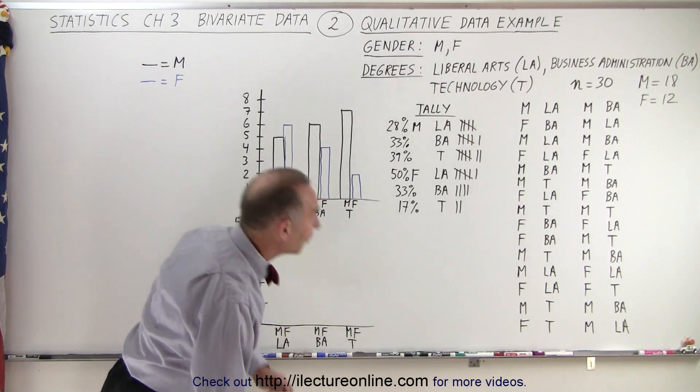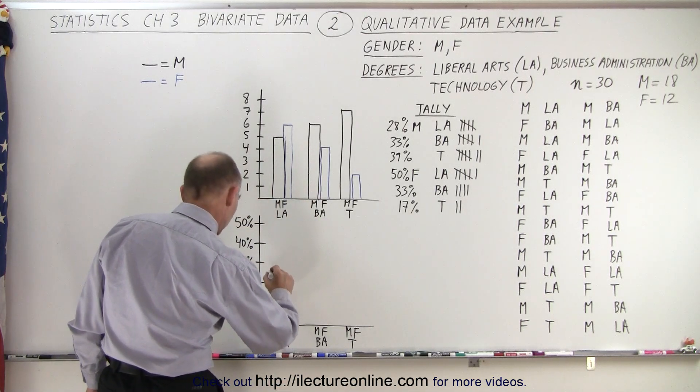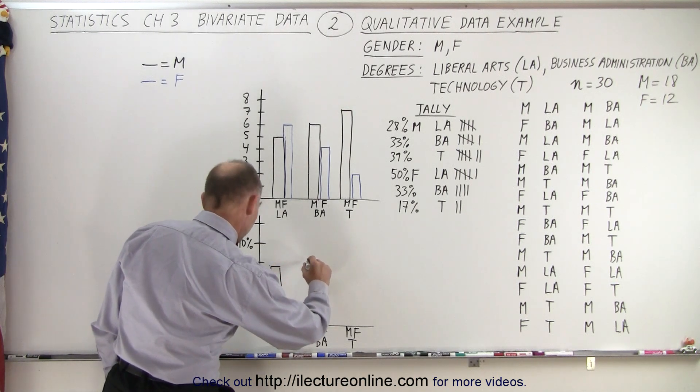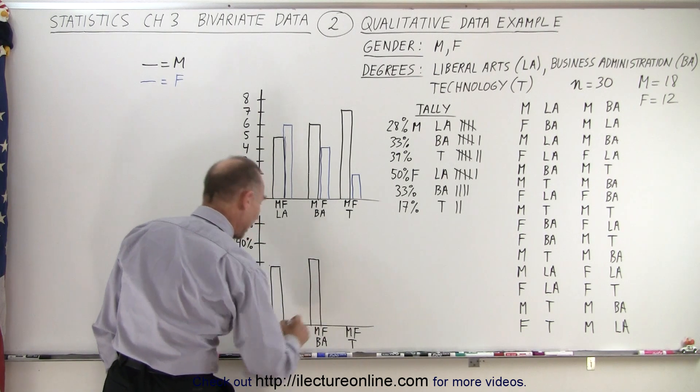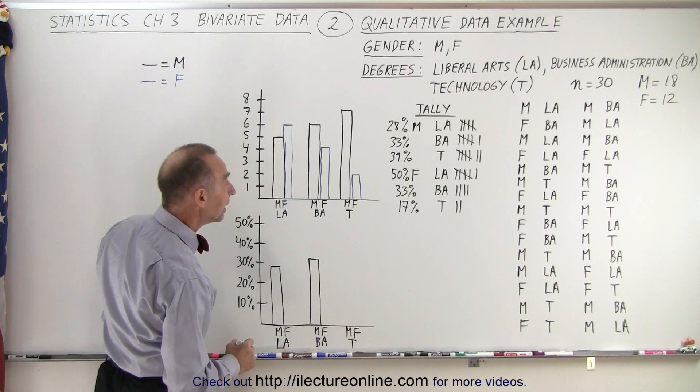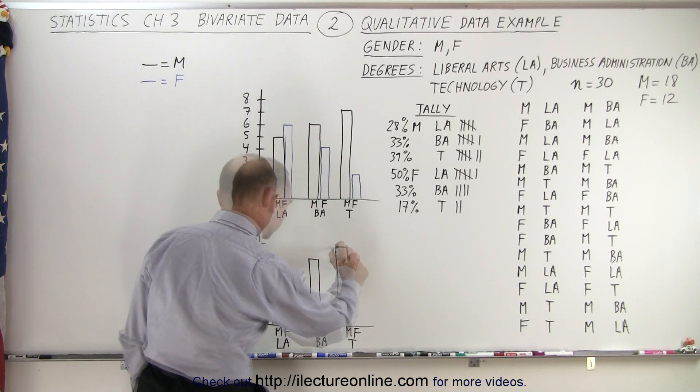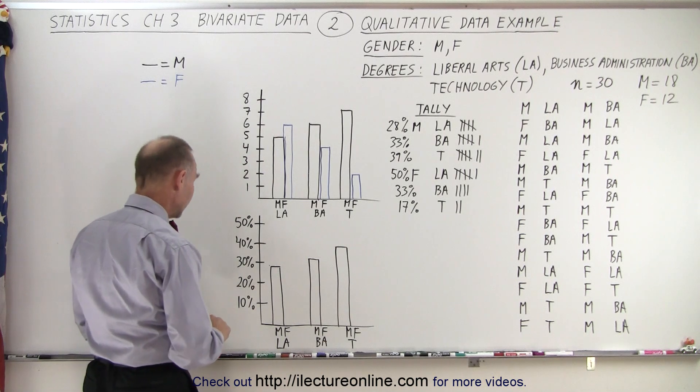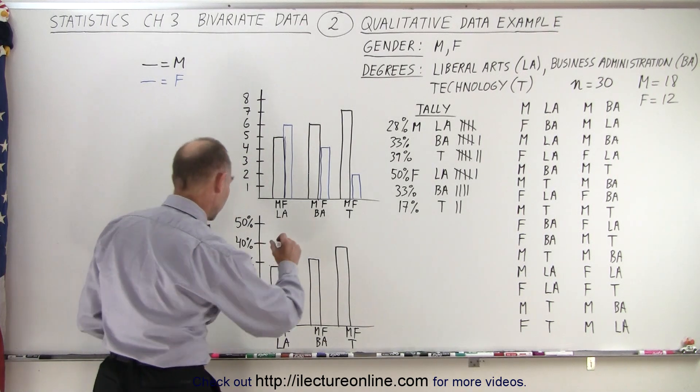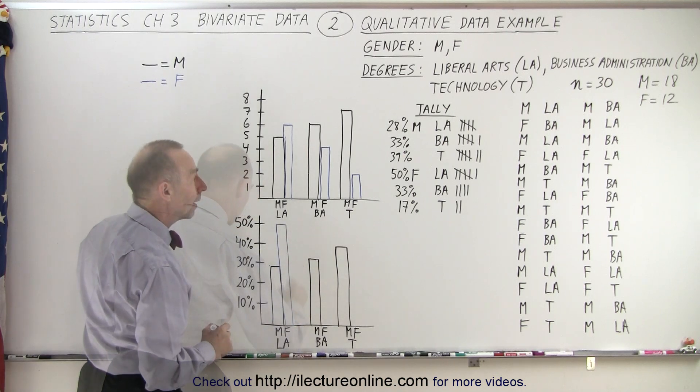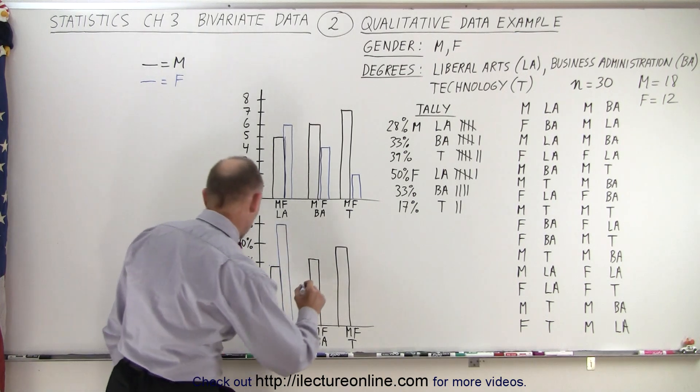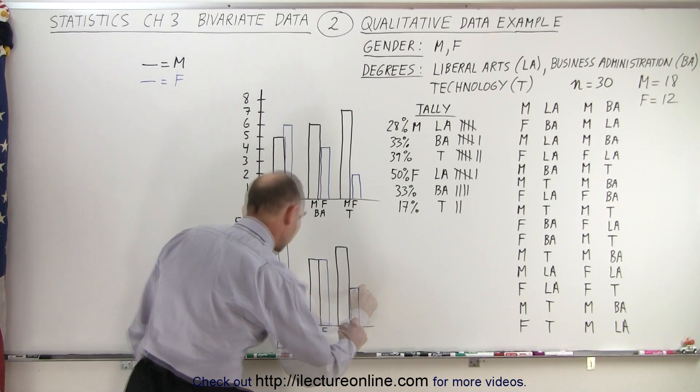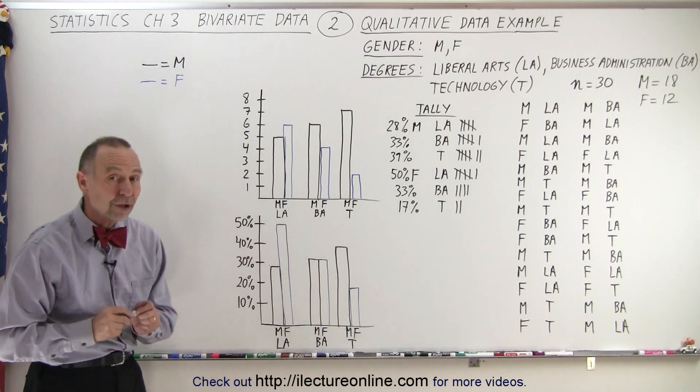28% get Liberal Arts degrees. So 28%, that's about this much. Business Administration is 33%. There we go. Now let's compare females to that. Let's see here. We have 50% Liberal Arts degrees. Business Administration is 33%. And Technology degrees is 17%. So now notice we get a very different picture.